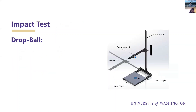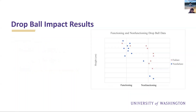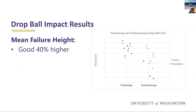Last but not least, we have the drop ball impact test, conducted by dropping a ball of fixed mass from varying heights onto a specimen below. The specimen is examined for visible cracking or fracture as evidence of failure. By conducting multiple trials at varying heights, we determine the mean failure height. Blue dots indicate no failure and red X's indicate failure. The good samples had a mean failure height 40 percent higher than the bad, and notably the bad data was more widely dispersed — a trend noticeable across all three mechanical tests.